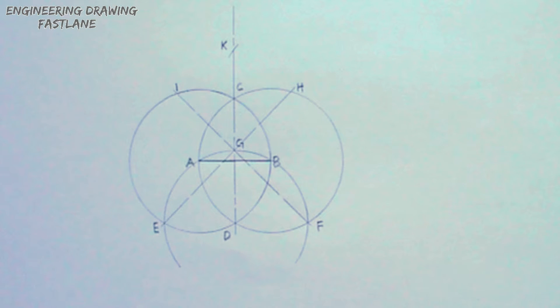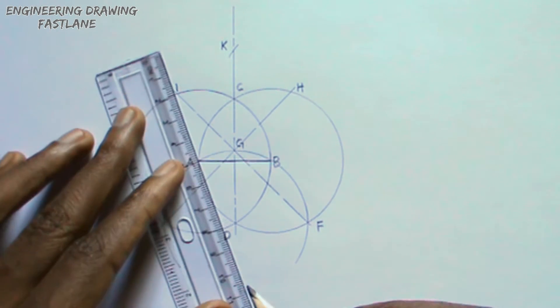To produce the pentagon, I will draw a line joining point A and point I, and another line joining point B and point H.